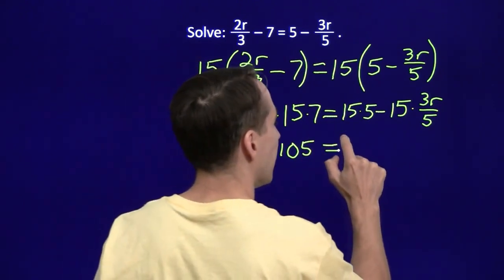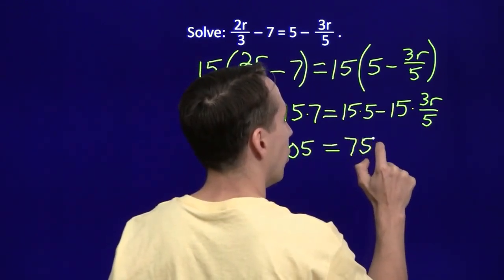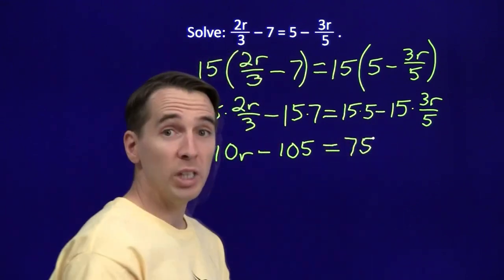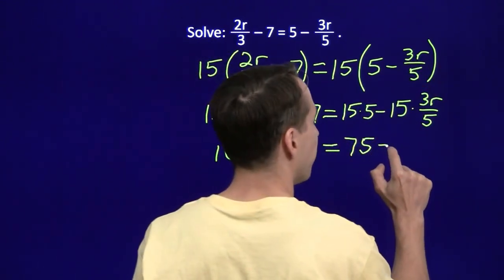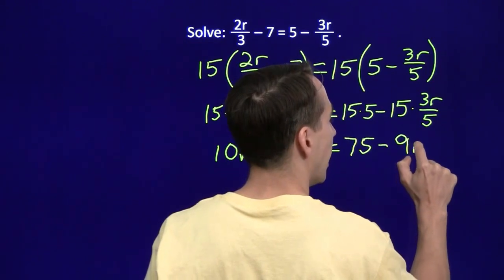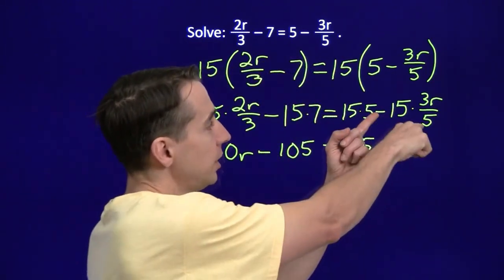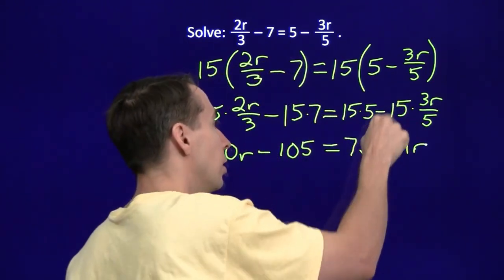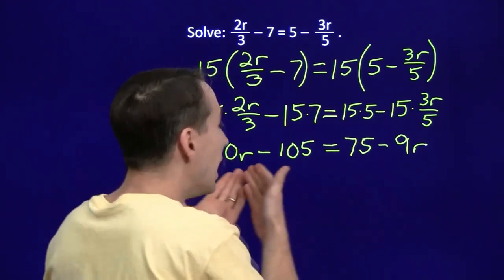15 times 5, that's just 75. Now, over here, 15 times 3r, that's 45r. 45r divided by 5 gives us 9r. Now, once again, we could have gone 15 divided by 5 gives us 3. 3 times the 3r gives us 9r.